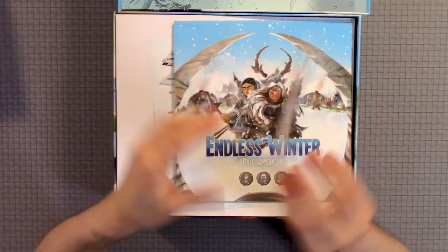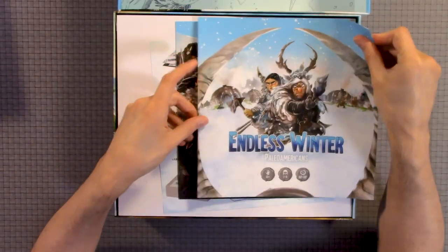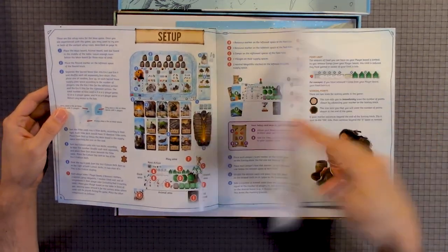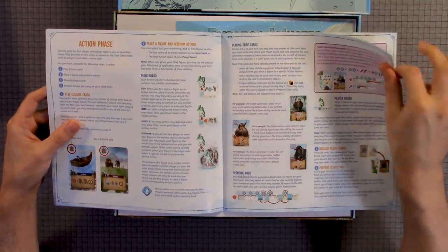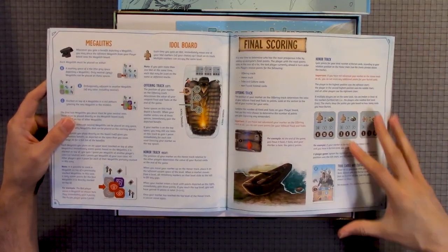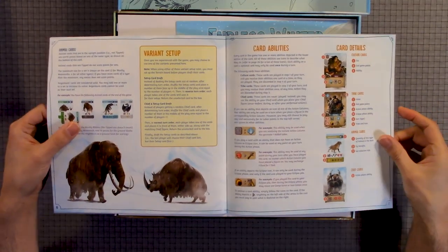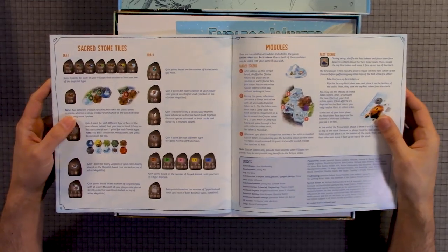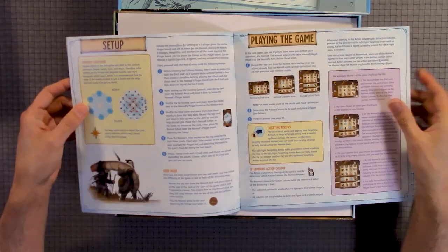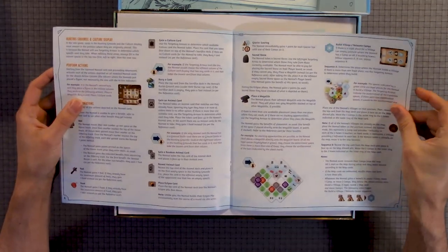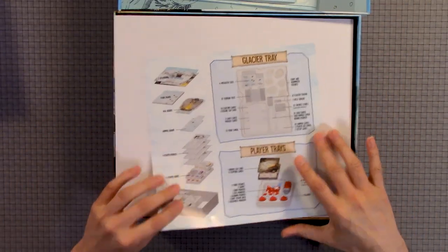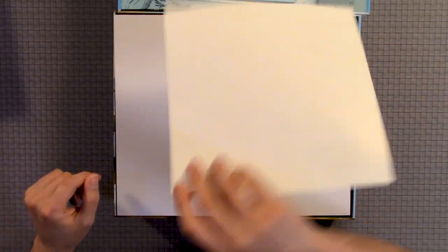Here we have Unconscious Minds, which we backed as well. Here's the rule book with overview components, setup, playing the game, preparation phase, action column, final scoring, variant setup, card abilities, secret stone tiles, modules, iconography. Here's the solo mode with setup, playing the game, final scoring, module integration. Here's how to put everything back. Definitely keeping that.